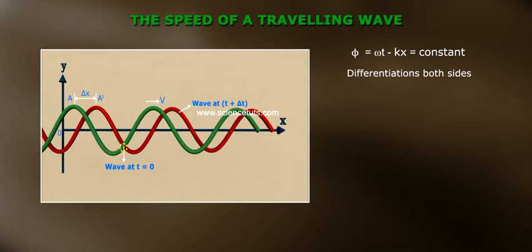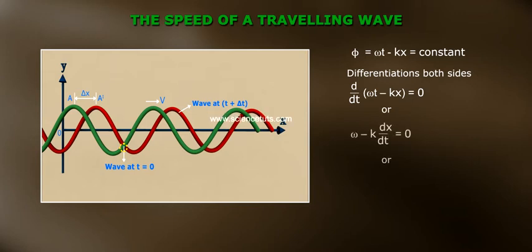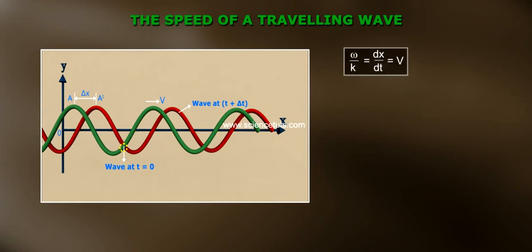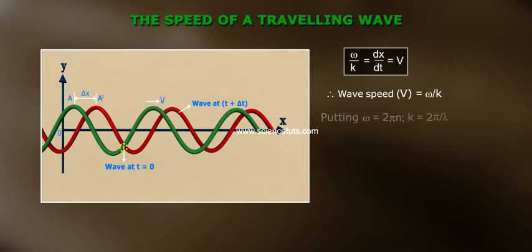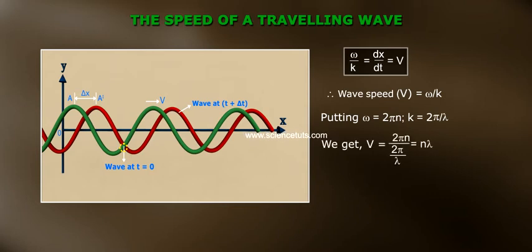Differentiating both sides of the above equation: d/dt(ωt - kx) = 0, or ω - k(dx/dt) = 0, or ω = k·(dx/dt), or ω/k = dx/dt = v. Therefore, wave speed v = ω/k. Putting ω = 2πn and k = 2π/λ, we get v = 2πn / (2π/λ) = nλ. Therefore, v = nλ.